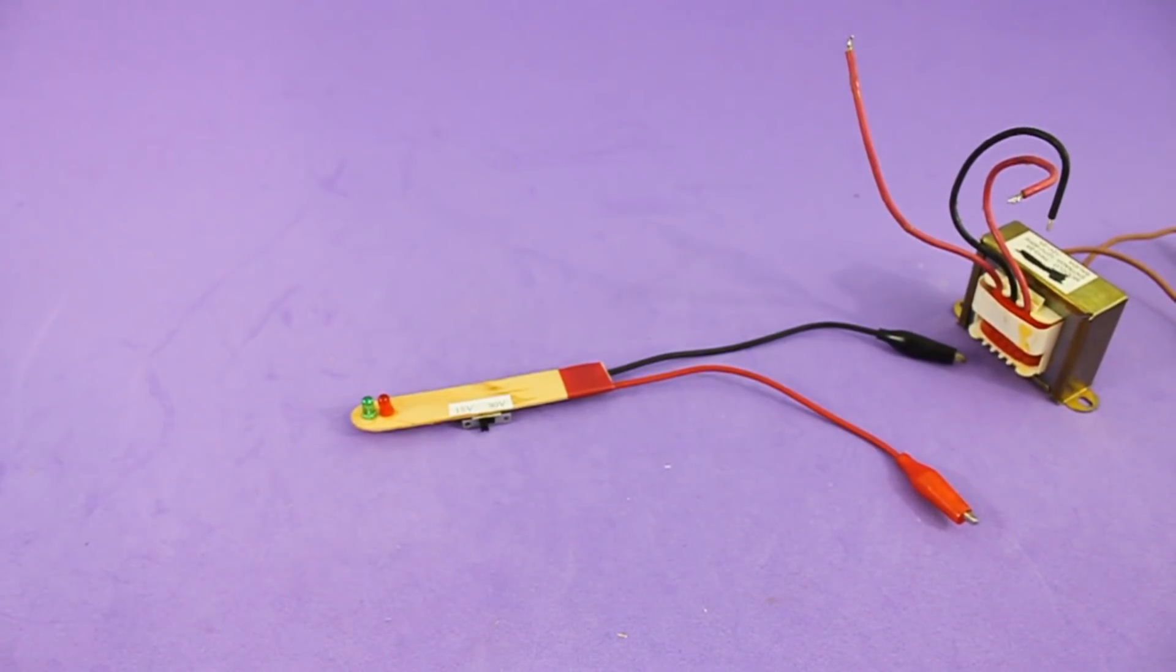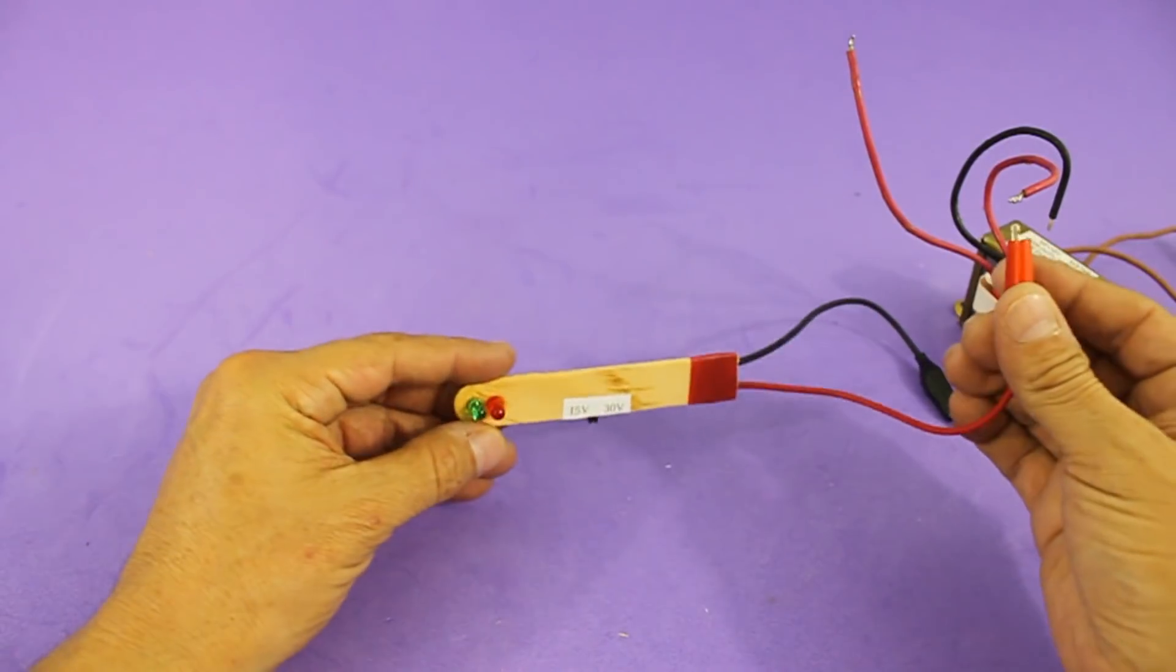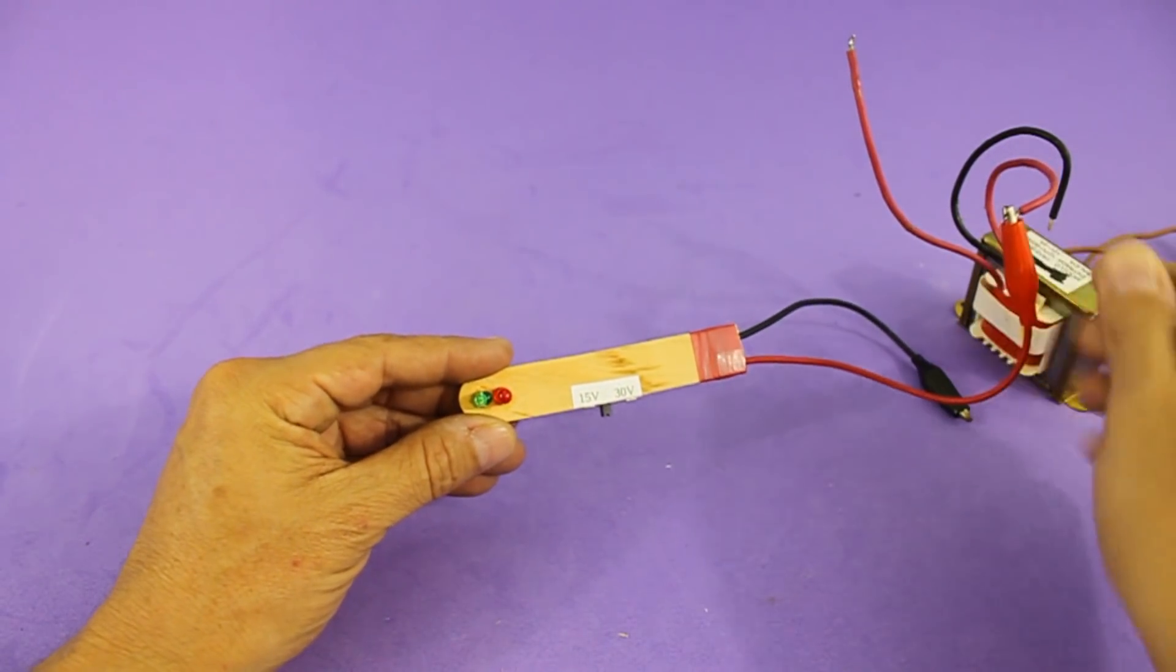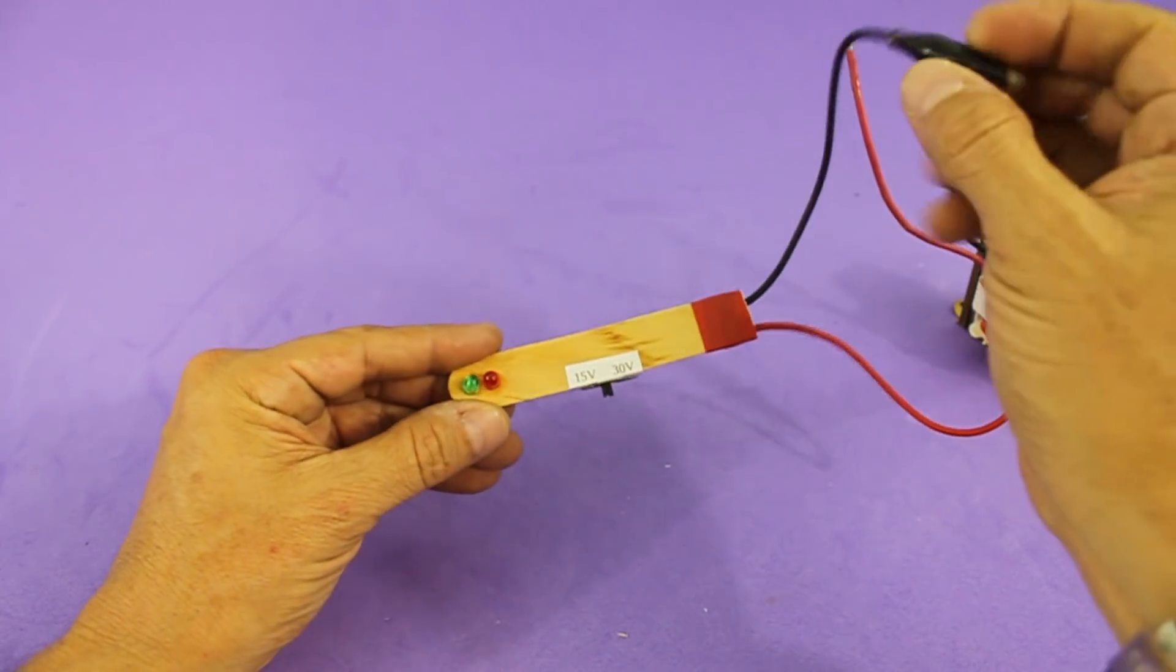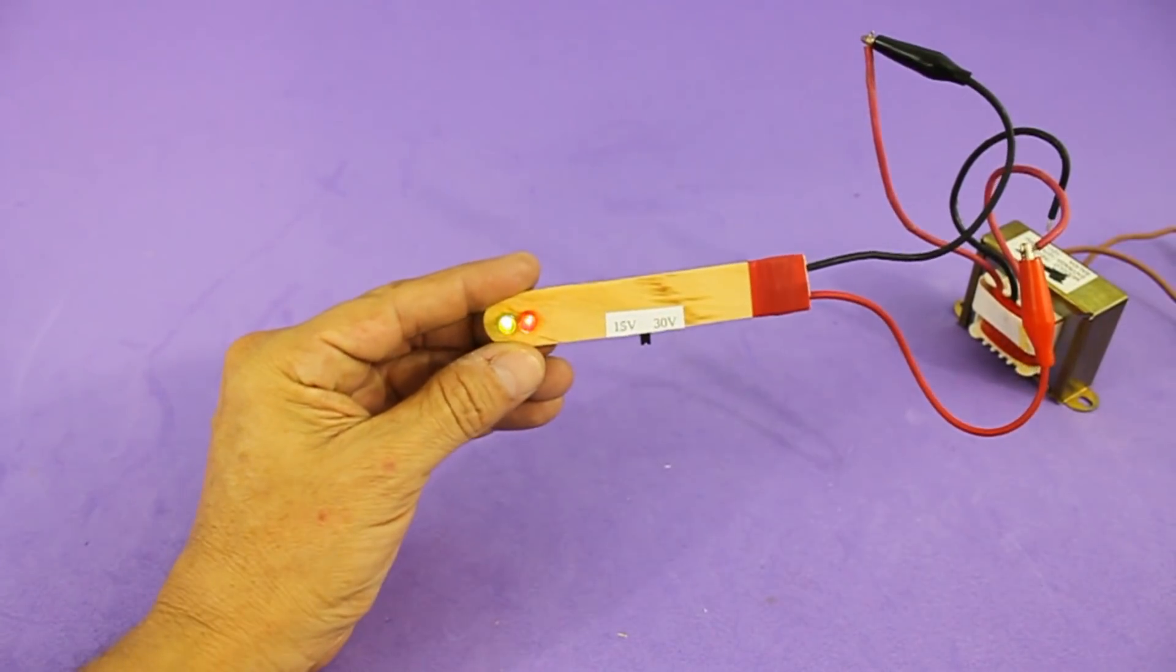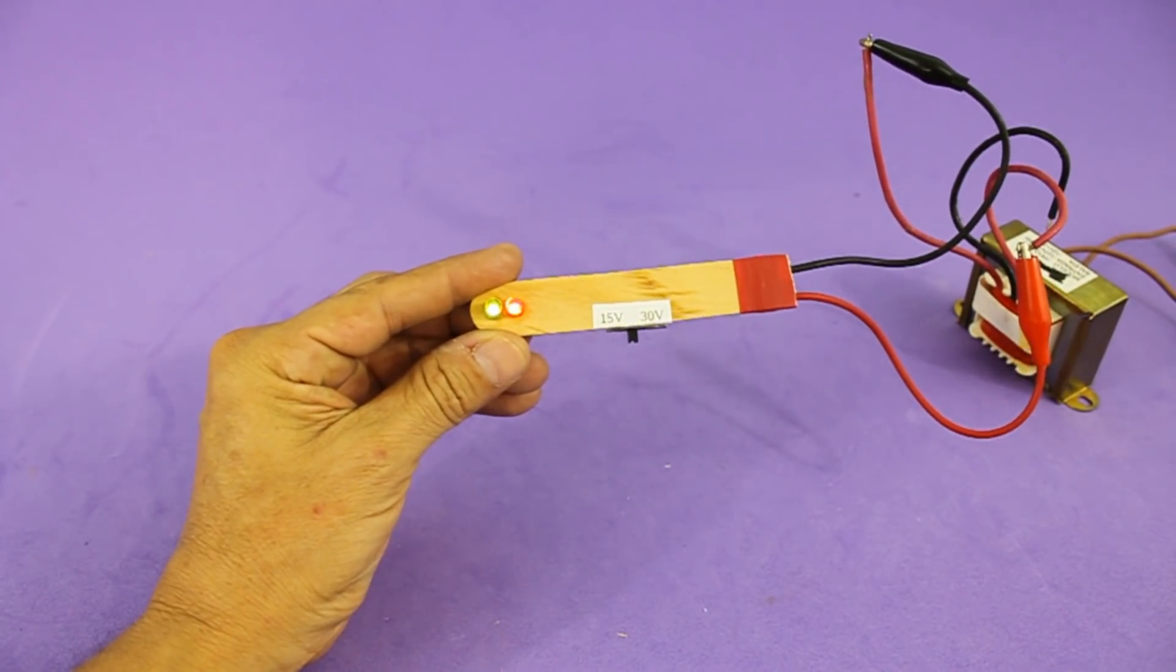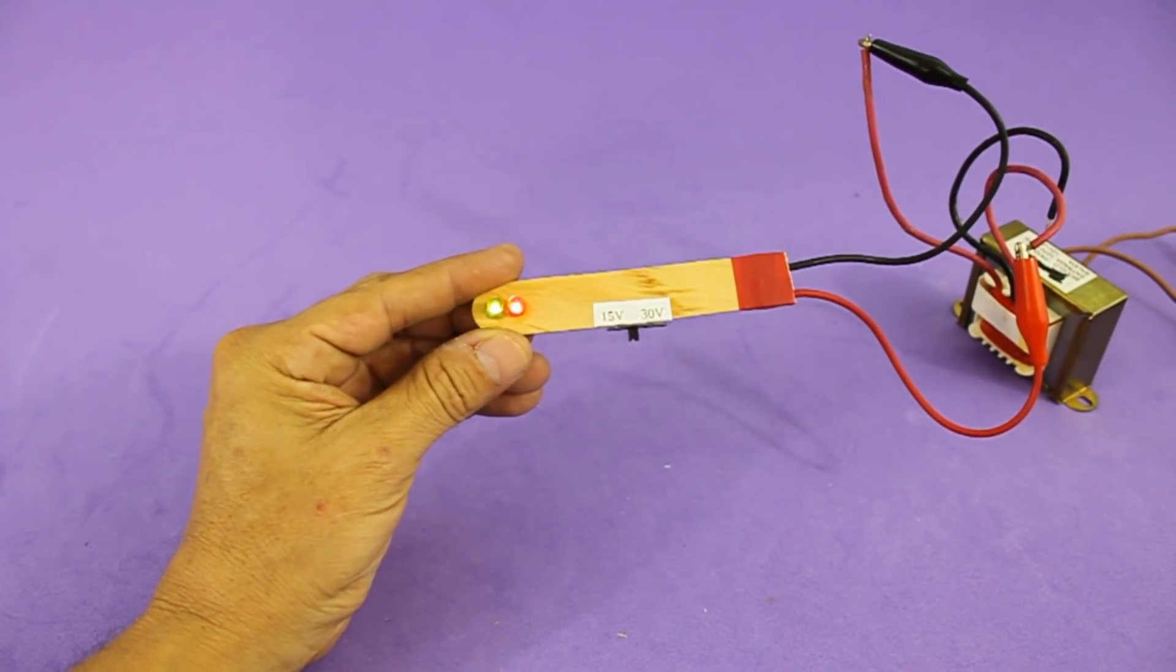Finally, what happens if the voltage that we are testing is AC. Let's see. In that case, both LEDs will turn on.